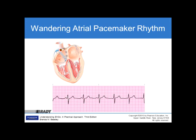Looking at the wandering atrial pacemaker, the SA node is firing some of the time, but the internodal pathway is also changing pacemaker sites and firing. In this six-second strip at the bottom, the P waves look different in every beat — the P waves are changing. So if you have more than three different P waves and the rate is normal, you have a wandering atrial pacemaker.